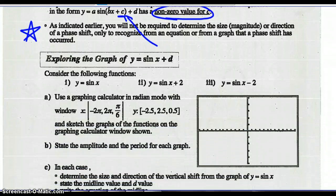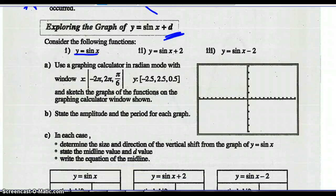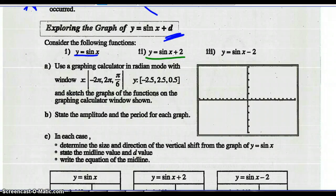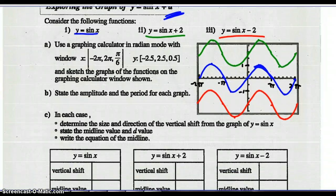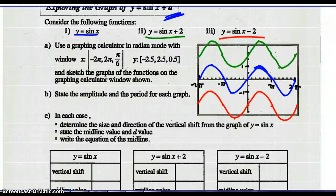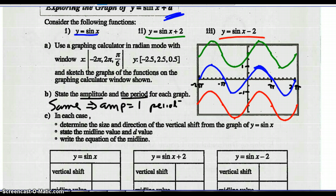Let's look at some parameter d graphs. Graph y equals sine x, y equals sine x plus two, and y equals sine x minus two, all in the same grid. Here are the graphs: sine x in blue, sine x plus two in green, and sine x minus two in red. The amplitude and period of each are all the same — amplitude is one, period is two pi. Nothing has changed for the amplitude and the period.